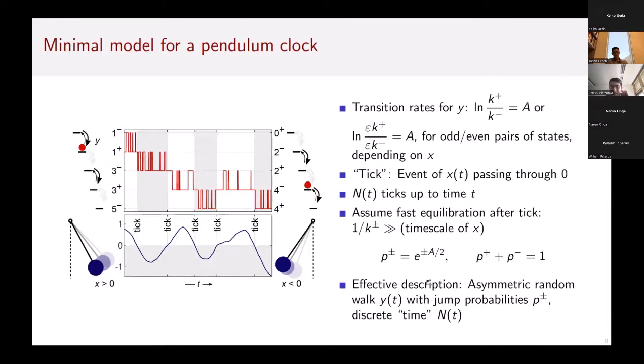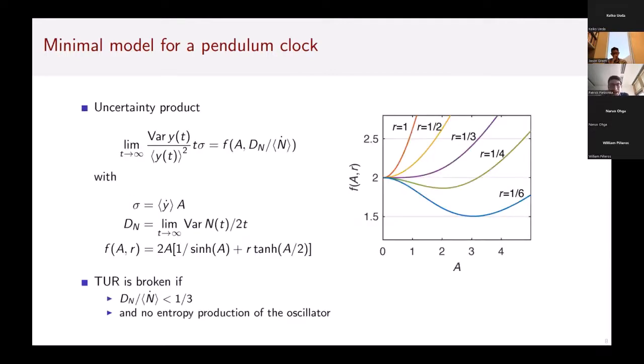In the end I can come up with an effective description. Basically I have an asymmetric random walk where in every swing of the pendulum I can either go to the next pair of states or, if I end up in the minus state, go back to the previous pair. I have discrete jump probabilities p+ and p- and some discrete time n(t) behind that asymmetric random walk that is itself stochastic. Now I can do all the algebra, which I'm going to spare you, and just show you the final result.